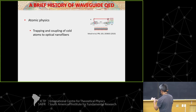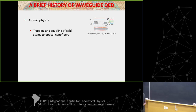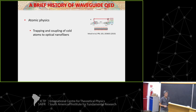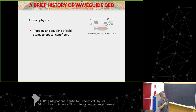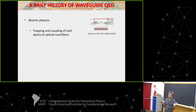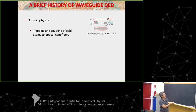There are different platforms in which you can potentially realize waveguide QED. Maybe the first one historically was with real atoms. Around 15 years ago, Arnold Rauschenbeutel's group was able to realize cold atoms coupled to optical nanofibers. Nanofibers start from just a normal glass fiber, and then you put it under a flame and pull it until some region becomes very thin — just a few hundred nanometers in diameter.